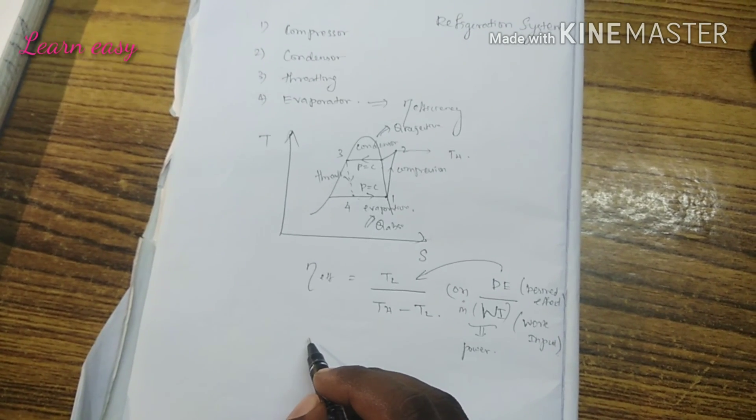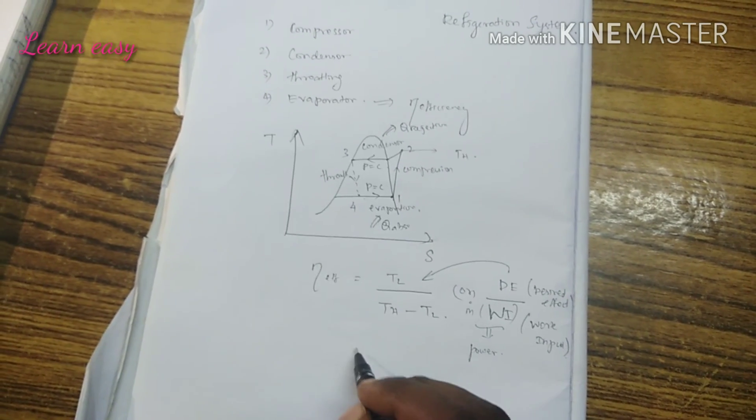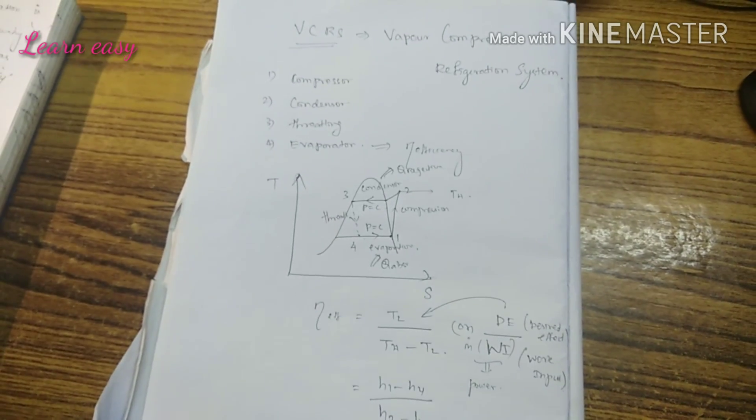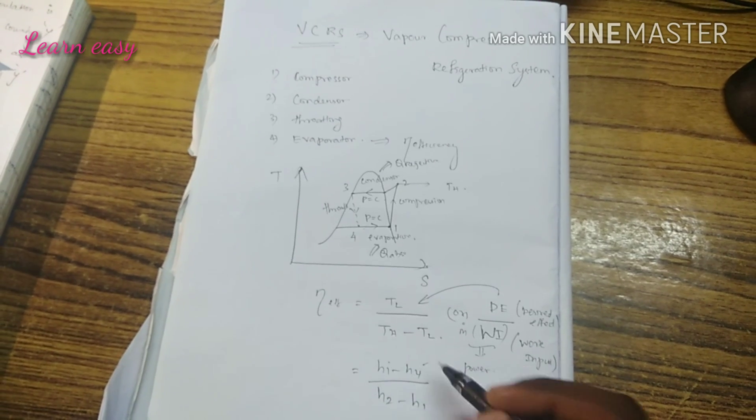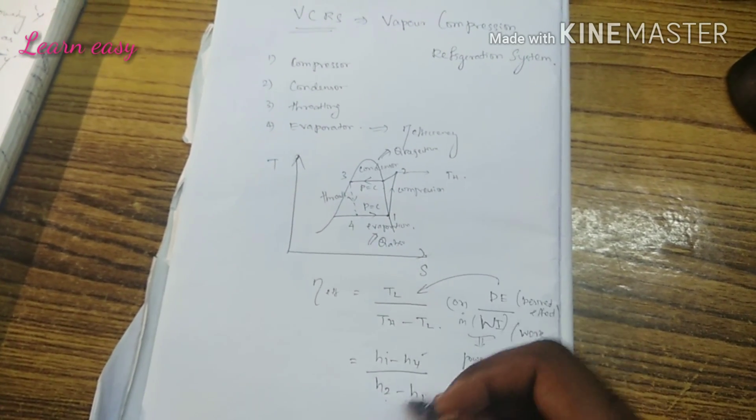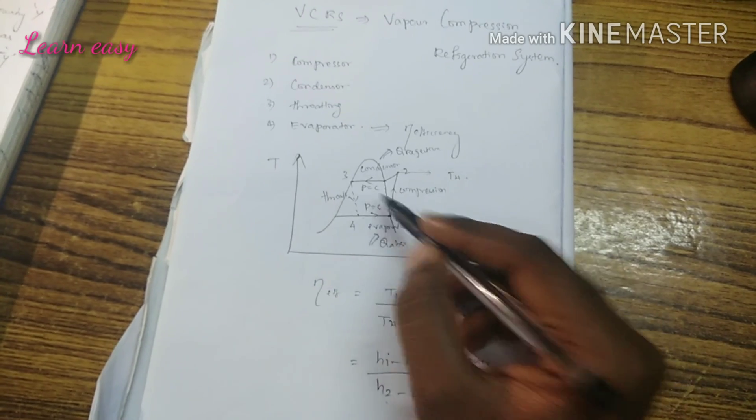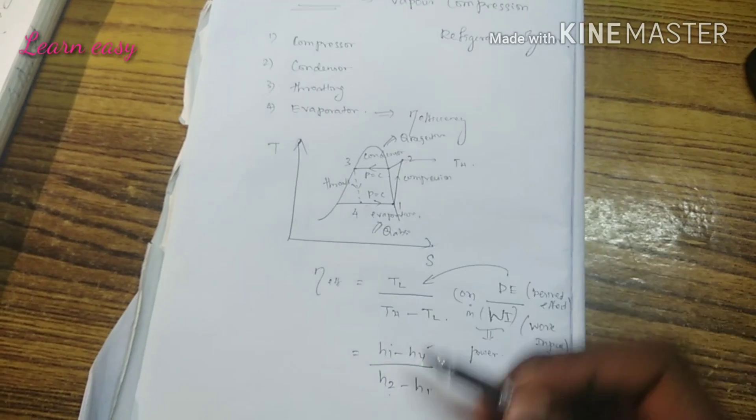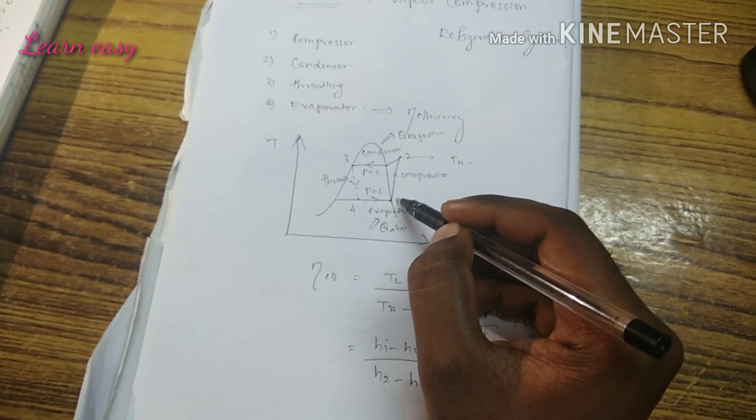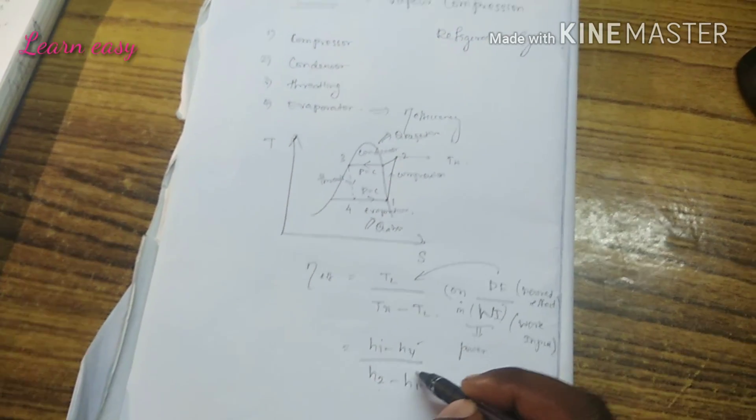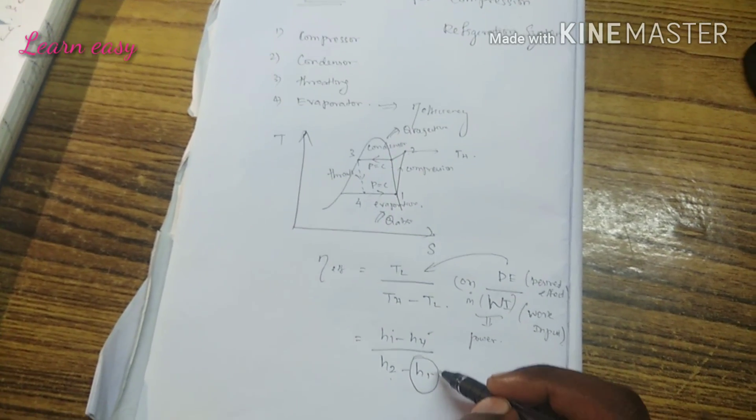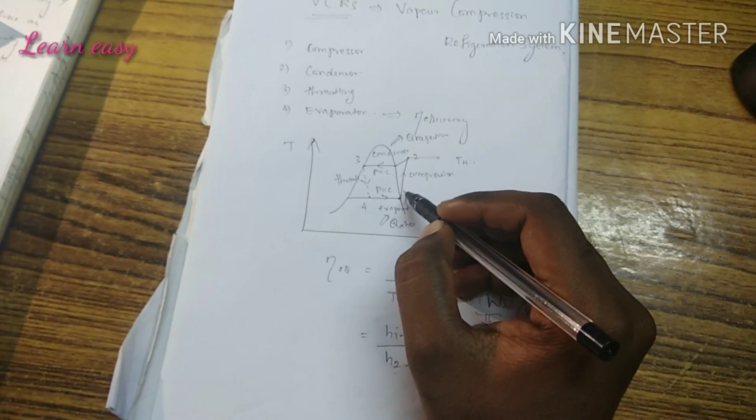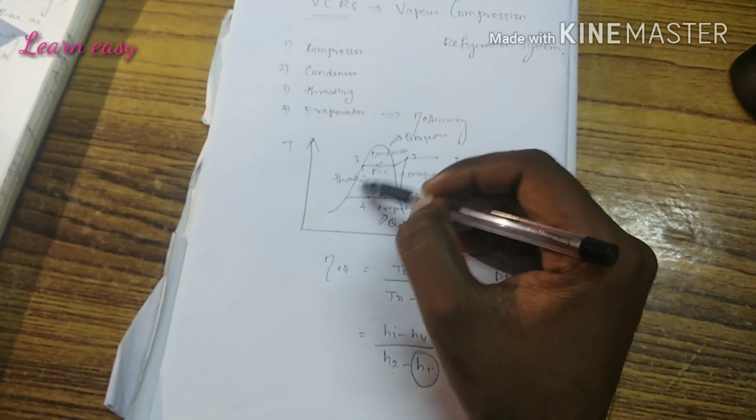For solving problems, we can rewrite the efficiency formula as H1 minus H4 divided by H2 minus H1. All these values can be taken from the temperature versus entropy diagram. H2 is at the end of compression, H1 is at the start of compression on the saturation line.